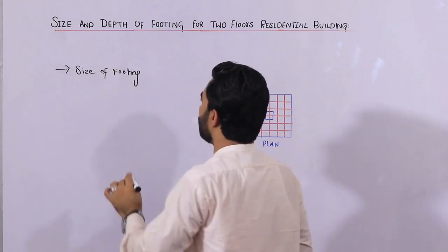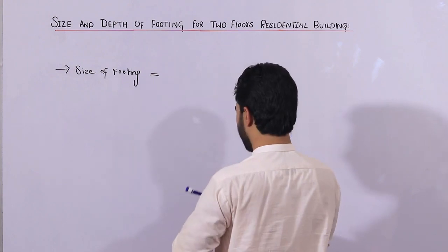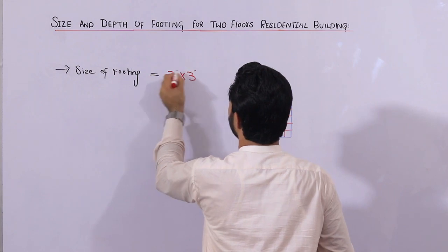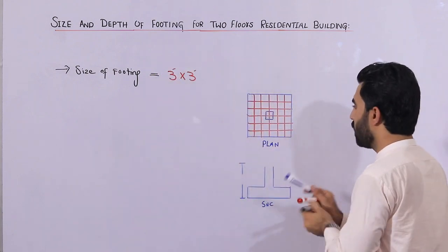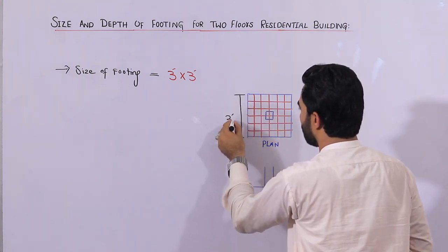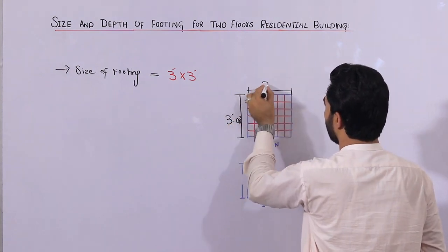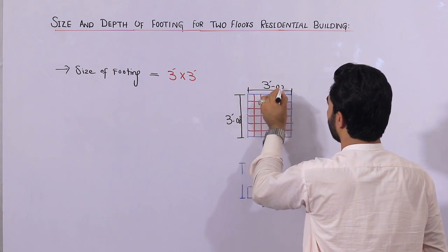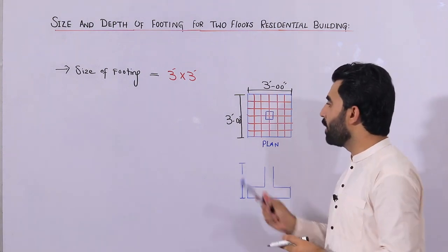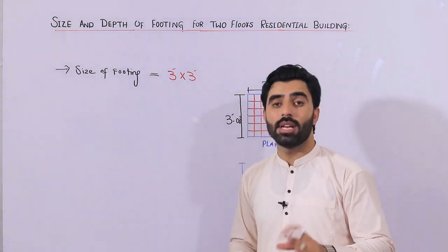Remember guys, the size of footing for two floors — G plus one story — it should not be less than three feet by three feet. As you can see in this plan, the size of footing should not be less than 3 feet 0 inches by 3 feet 0 inches. You can increase but it should be a minimum of three by three feet. This is the size of footing for G plus one story for a residential building, not for a commercial building.